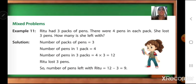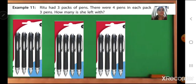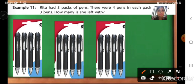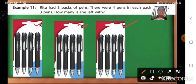So slowly, first you understand one by one sentence. Now what they have given in the question: Ritu had 3 packs of pens. Can you see here? This is 1, this is 2, and this is 3 — there are 3 packs of pens. And each pack, there are how many pens? 4. See: 1, 2, 3, and 4. Each pack there are 4 pens.